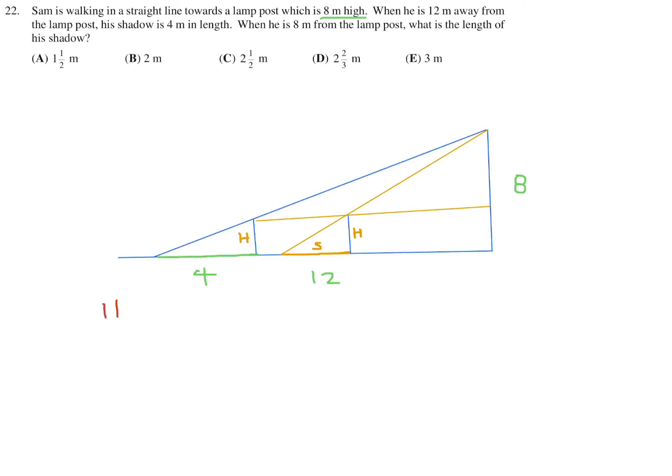So that means that h over 4 is the same as 8 over the total distance. And that total distance is 16 because from here to here is 12, and from here to here is 4. So that gives you 16h is equal to 32, and therefore h is equal to 2. So he is a pretty tall guy. He's 2 meters in height.